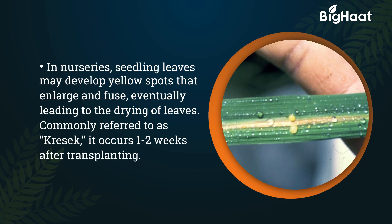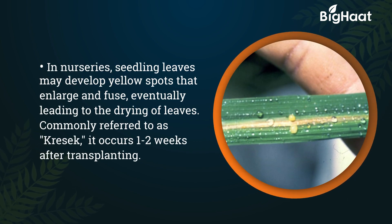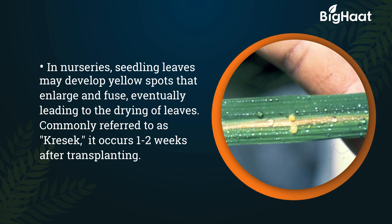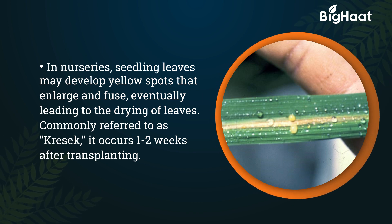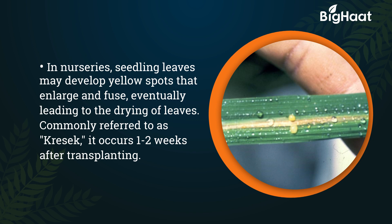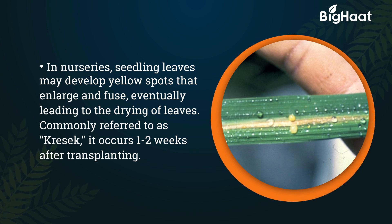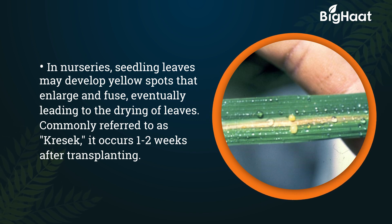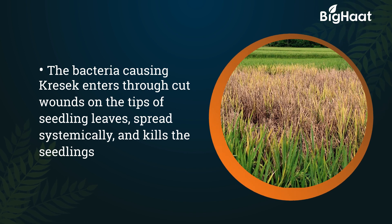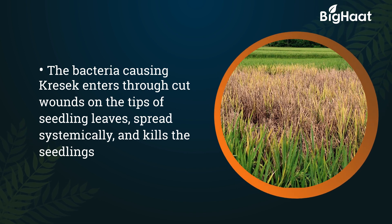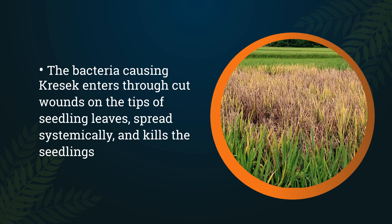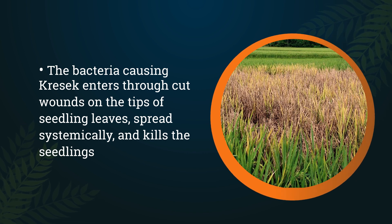In nurseries, seedling leaves may develop yellow spots that enlarge and fuse, eventually leading to the drying of leaves. Commonly referred to as Crisec, it occurs 1-2 weeks after transplanting. The bacteria causing Crisec enters through cut wounds on the tips of seedling leaves, spreads systematically, and kills the seedlings.